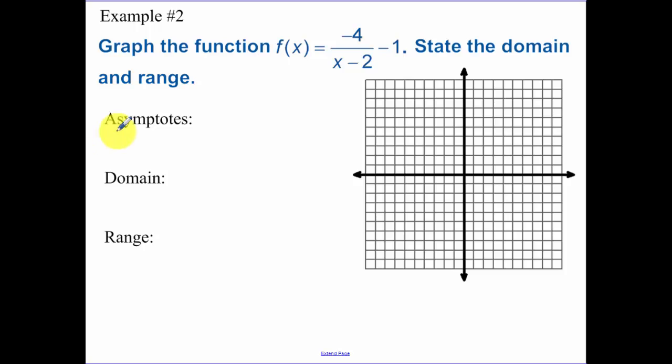Example 2. Graph this function. State the domain and range. So minus 2 shifts us right 2. So that asymptote x equals 2. Minus 1. That's down 1. So y equals negative 1. Negative 4. Normally we'd be up here and down here. I call them dueling corners. Normally we'd be in dueling corners. But now I need to flip what was in those dueling corners across the y axis. or cross the x-axis because of this negative. So that means that now we're in opposite Doolin corners. We're right there and right there.